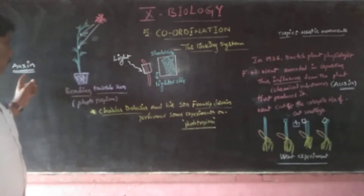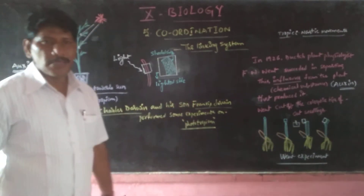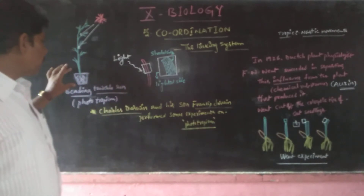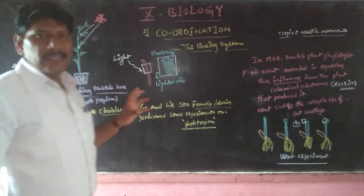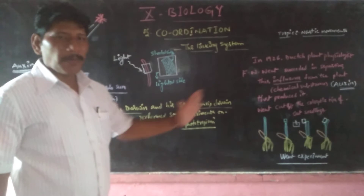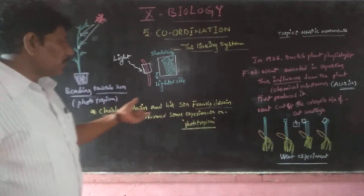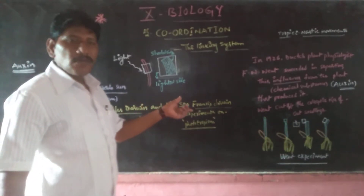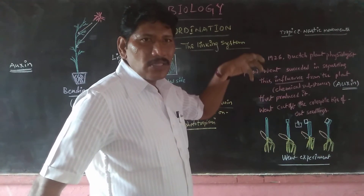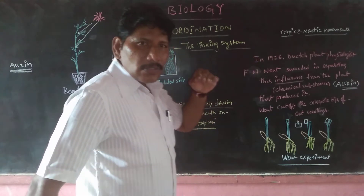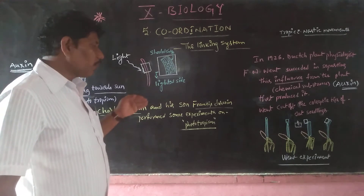This information began with collecting auxins from some plants by Charles Darwin and his son Francis Darwin. There were two experiments: first, the experiment by Charles Darwin and his son Francis Darwin, followed by the F.W. Went experiment. Based on these two experiments, we came to know about the phytohormone auxin.